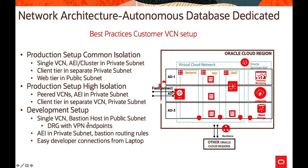For development setups you can use a single VCN or a bastion host in a public subnet, connecting to OCI over a VCN endpoint to DRG with Autonomous in a private subnet. Bastion routing rules have to be factored in, along with easy developer connections from your laptop. On the right-hand side you see the setup depicted with the Oracle Cloud region, availability domains, and database placements.